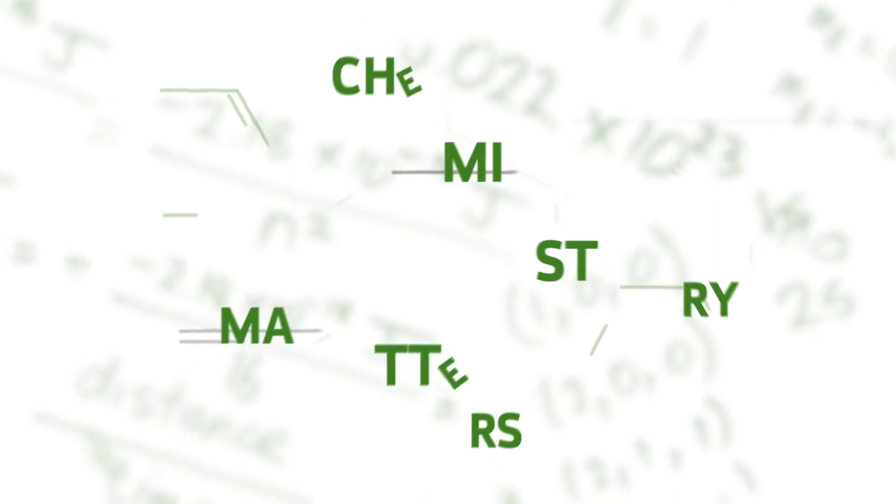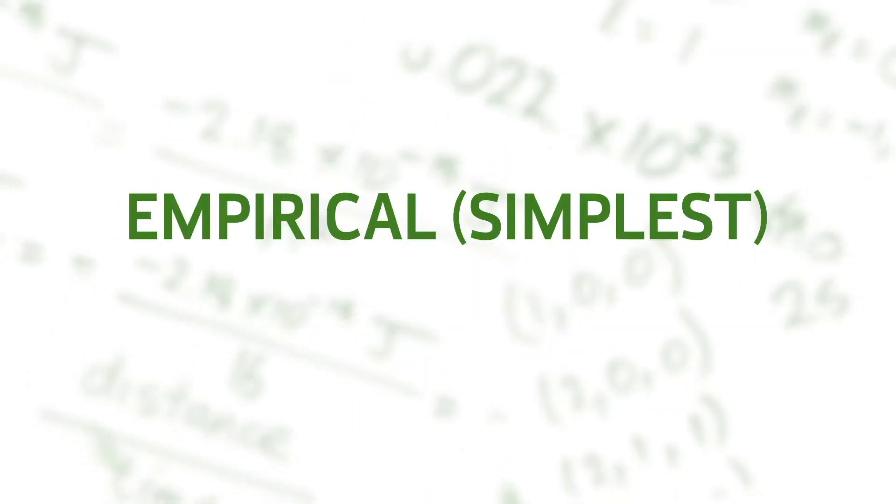Hi, I'm Prof L and welcome to Chemistry Matters. Today we are going to do a couple of problems which involve figuring out the chemical formulae of unknown compounds. You've probably sat in class or lectures and your teacher has written stuff up on the board saying the chemical formula of aluminium sulfate is Al2(SO4)3, or the chemical formula of calcium chloride is CaCl2. How do we actually know these chemical formulae? Well, the answer is that we carry out analyses of these particular compounds.